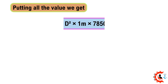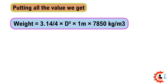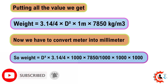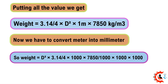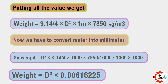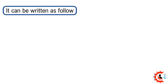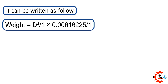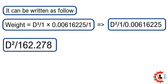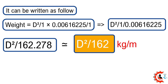Putting all the values in: Weight = (3.14/4) × d² × 1 × 7850. Converting meters to millimeters: Weight = d² × (3.14/4) × (1/1000) × (7850 / (1000 × 1000)). This simplifies to: Weight = d² × 0.00616225, which can be written as Weight = d² / (1/0.00616225) = d² / 162.278, approximately equal to d² / 162.